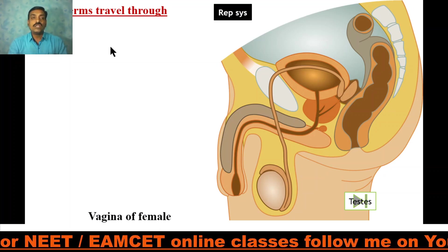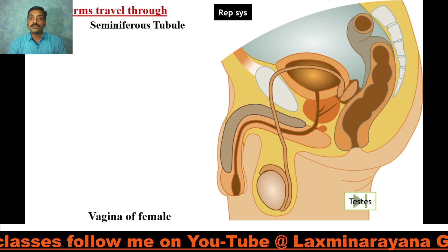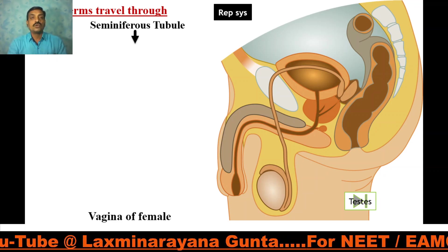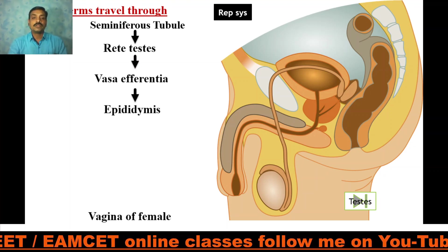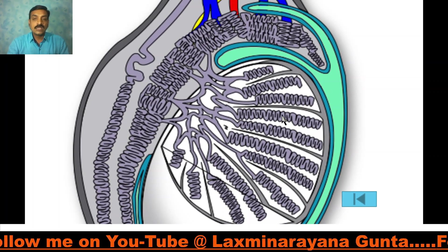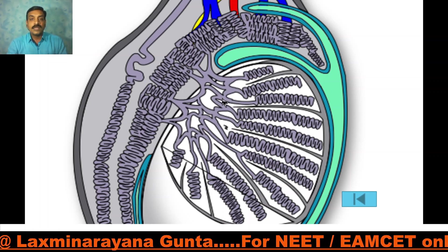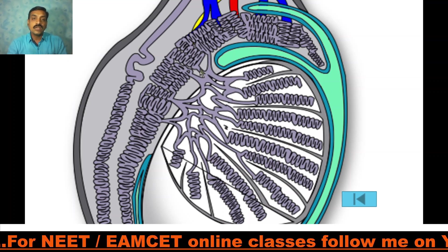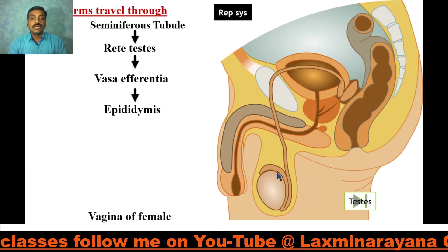Now let us see how sperms travel through the ducts. The sperms are produced in the seminiferous tubules. They travel through the rete testis, reach the vasa efferentia, and from there reach the epididymis. Five to ten ducts from the seminiferous tubules unite to form the rete testis, which leads into the epididymis through the vasa efferentia. From the epididymis they pass to the vasa deferentia, or ductus deferens.